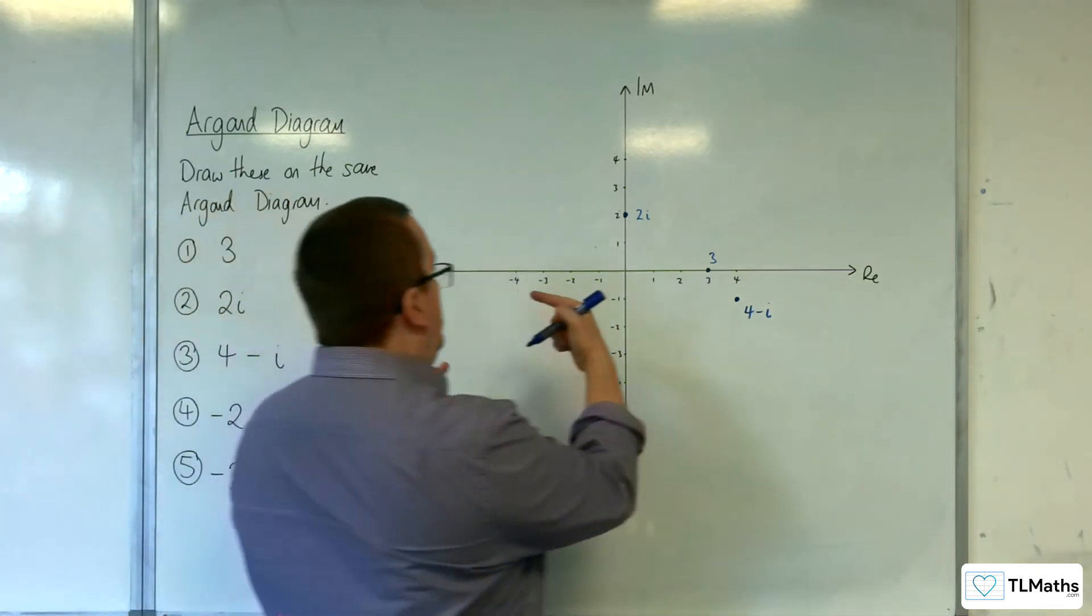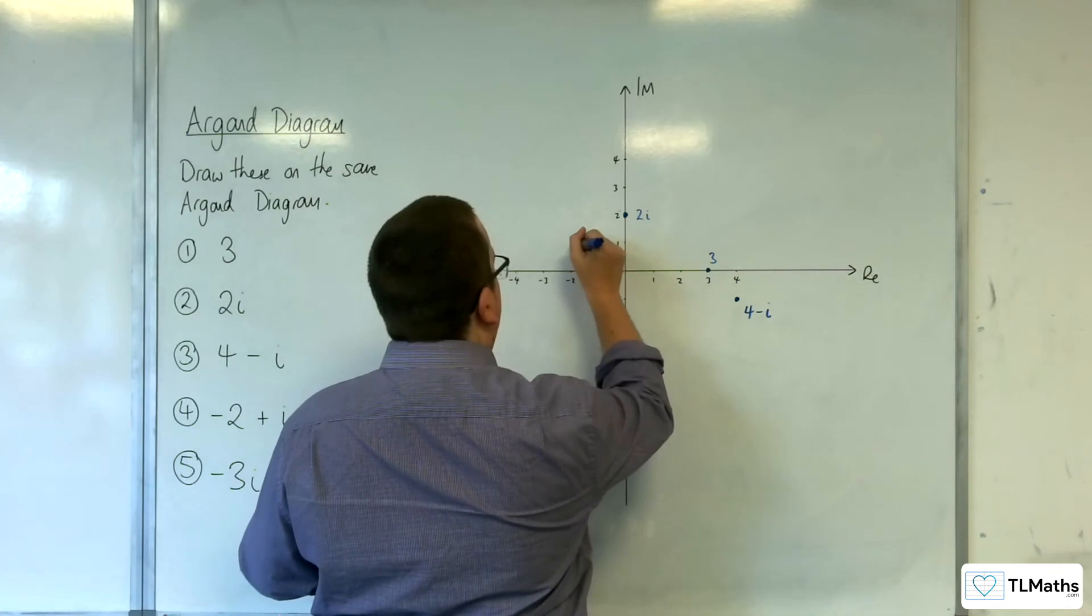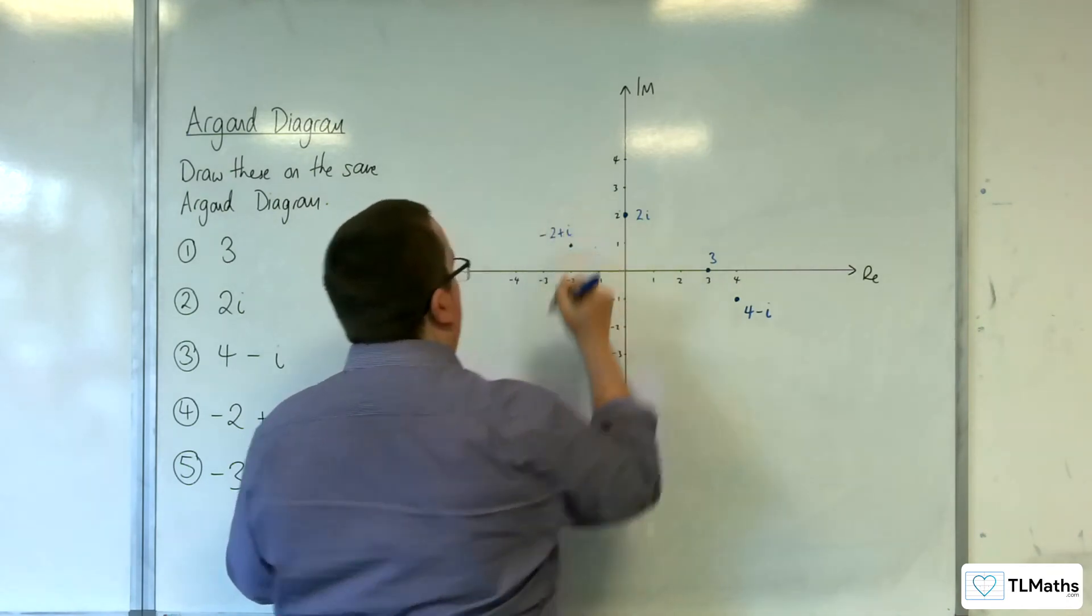Minus two plus i, so minus two along and one up. Like that.